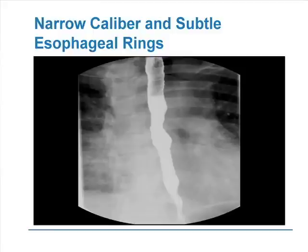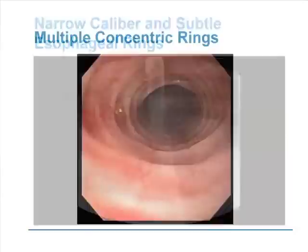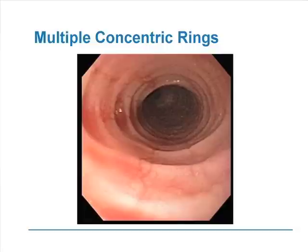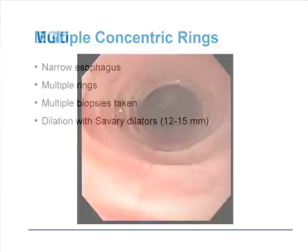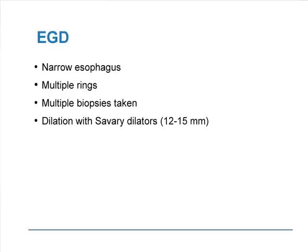An x-ray shows a rippled esophagus with a narrow caliber. Those ripples are created by subtle esophageal rings. On endoscopy, you see a succession of concentric firm rings throughout the entire esophagus. The esophagus is narrow and there are multiple rings.